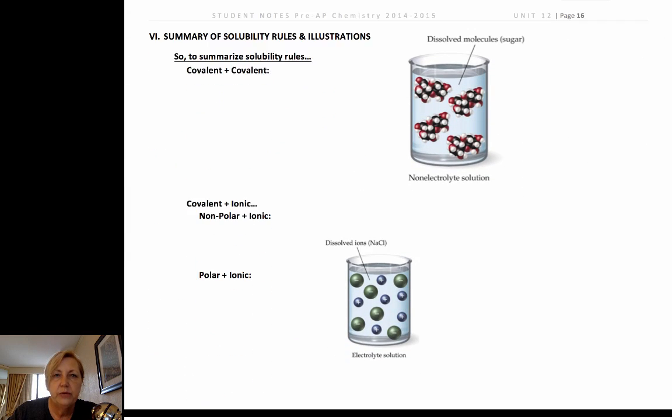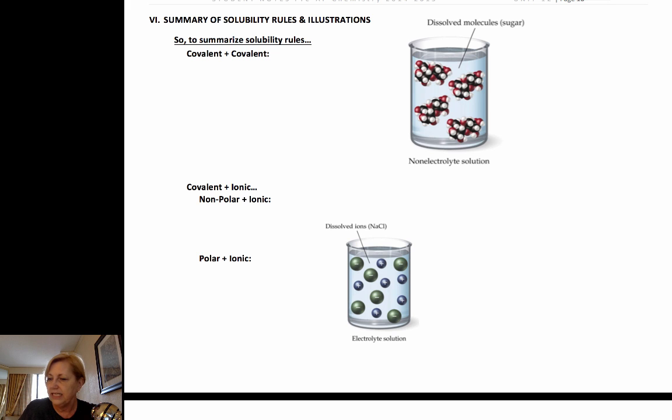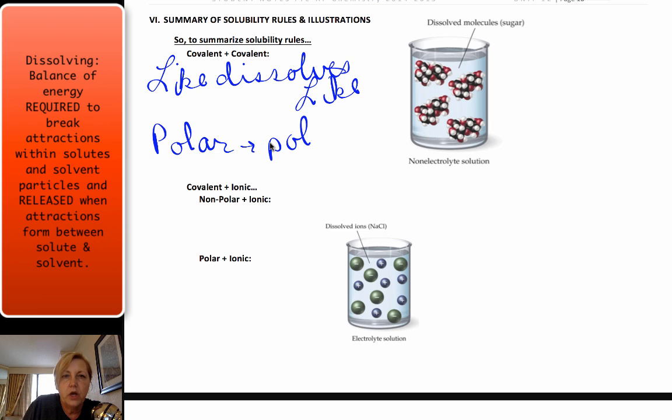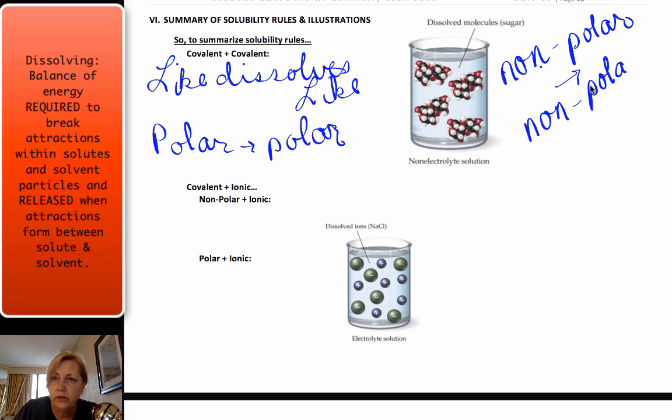So in summary when we talk about these types of pictures remember the key term is like dissolves like. So with covalent and covalent we want to go by that rule like dissolves like. So that means it's going to be polar dissolving in polar or nonpolar like gasoline dissolving in nonpolar solvents, nonpolar solutes in nonpolar solvents.